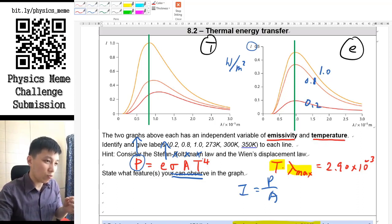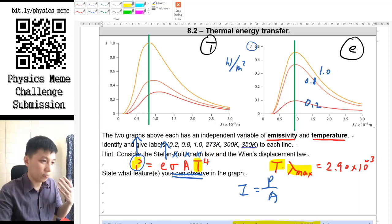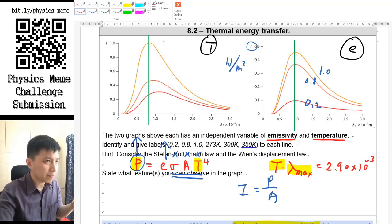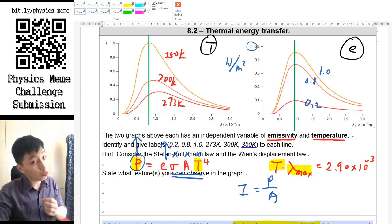As for the temperature, the emissivity should be the same. However, when you put that into the Stefan-Boltzmann equation, since T already increased, then power will also be increased, so intensity also increases. The one at the top will simply be the one with greater temperature, so I would say 350K, 300K, and 273K.